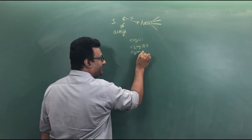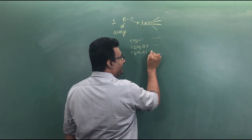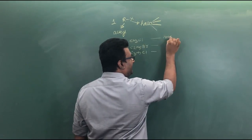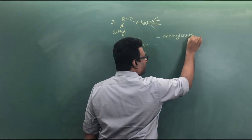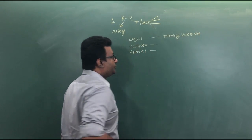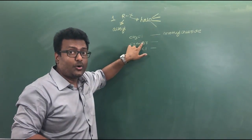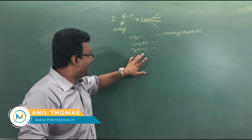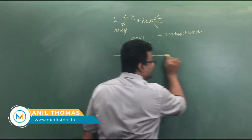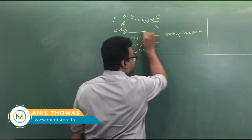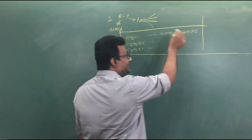The common name for CH3Cl is methyl chloride. The common name for C2H5Br is ethyl bromide, and for C3H7Cl it is propyl chloride. This is the common naming system — the template is alkyl halide.